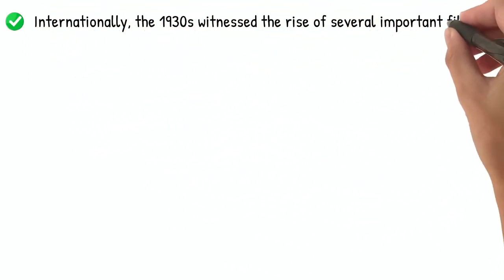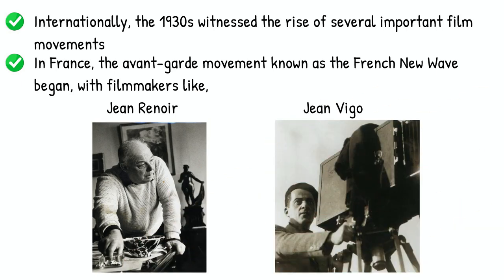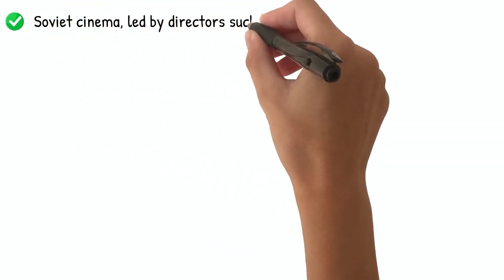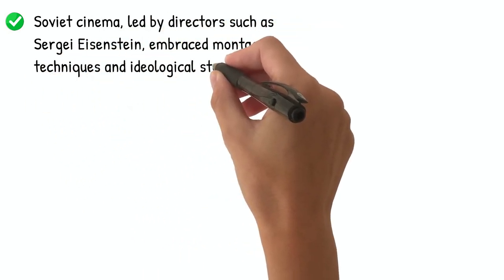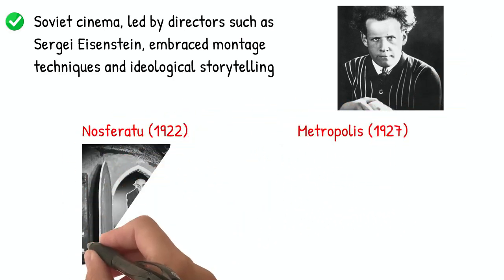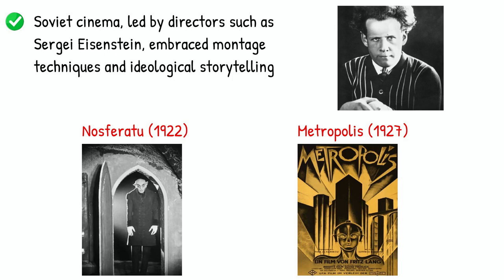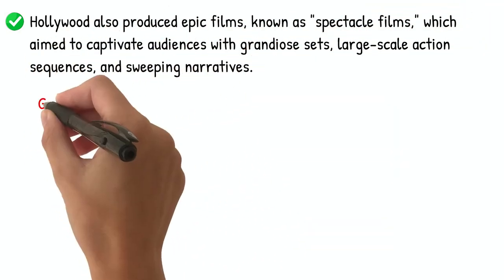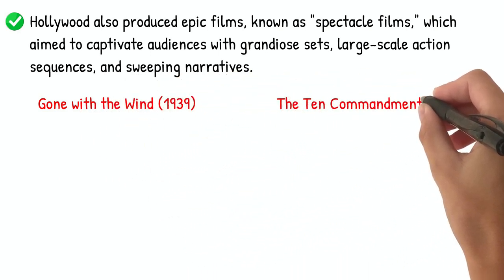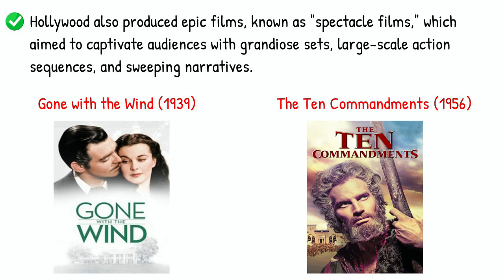Internationally, the 1930s witnessed the rise of several important film movements. In France, the avant-garde movement known as the French New Wave began, with filmmakers like Jean Renoir and Jean Vigo pushing the boundaries of storytelling and visual style. Soviet cinema, led by directors such as Sergei Eisenstein, embraced montage techniques and ideological storytelling. The German Expressionist movement, with films like Nosferatu (1922) and Metropolis (1927), showcased bold and stylized visuals. Hollywood also produced epic films, known as spectacle films, which aimed to captivate audiences with grandiose sets, large-scale action sequences, and sweeping narratives. Examples include Gone with the Wind (1939) and The Ten Commandments (1956).